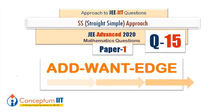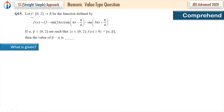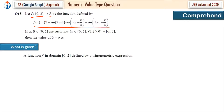Question number 15. Let's comprehend. What is given? A function f. Let function f from domain [0, 2] to ℝ be the function defined by: f(x) = 3 - sin(2πx) · sin(πx - π/4) - sin(3πx + π/4). A function f on domain [0, 2] defined by a trigonometric expression.